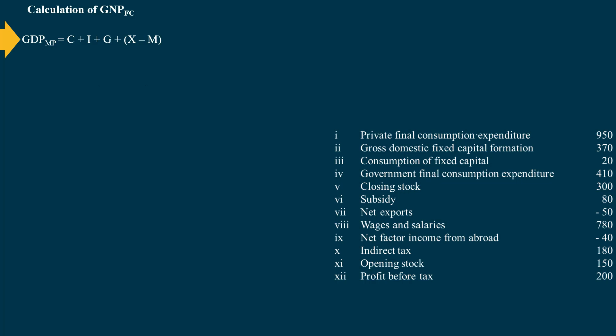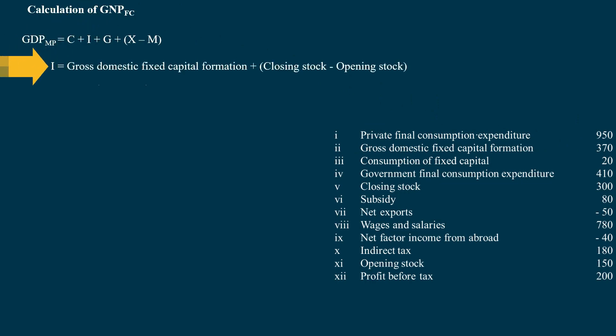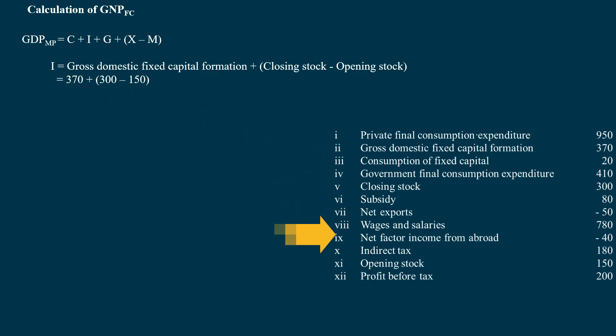Using the expenditure method, GDP at Market Price = C + I + G + (X - M). C, Private Final Consumption Expenditure = 950 Crores. Investment I = Gross Domestic Fixed Capital Formation plus Closing Stock minus Opening Stock = 370 + 300 - 150.